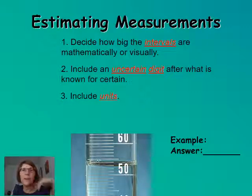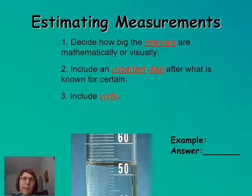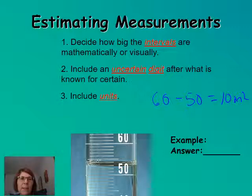So we're going to look at it and we see that it's 60 and 50 there. So we can say that between 60 and 50 there's 10 milliliters. So this is how we would do it mathematically. There's 10 milliliters and we would count 1, 2, 3, 4, 5, 6, 7, 8, 9, 10. So we would divide by 10.